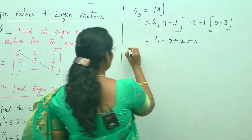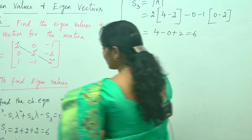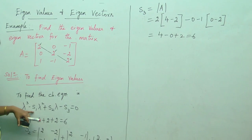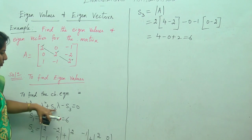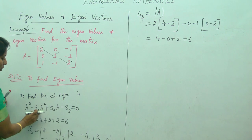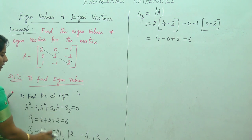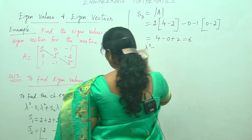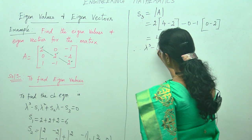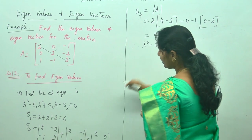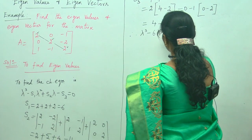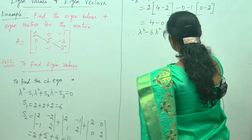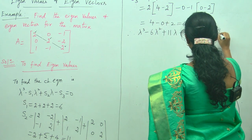Using S1, S2, S3, we write the characteristic equation. By the formula lambda cubed minus S1 lambda squared plus S2 lambda minus S3, substituting: lambda cubed minus 6 lambda squared plus 11 lambda minus 6 equals 0. This is the characteristic equation.